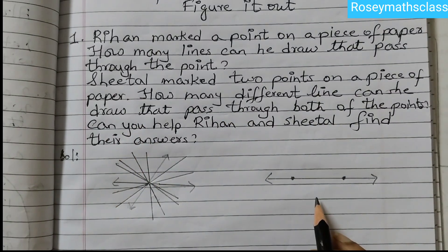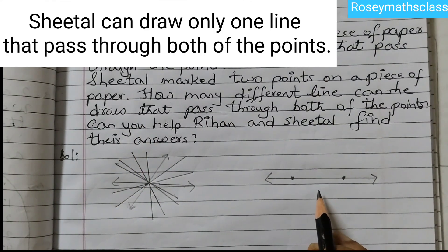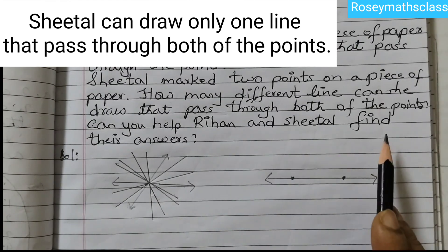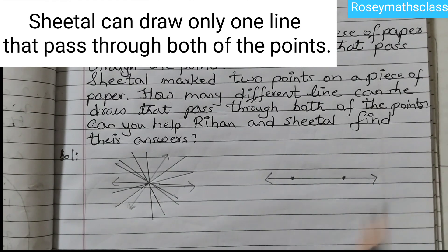The answer to the second one is, Sheetal can draw only one line. Only one line that pass through both of the points.